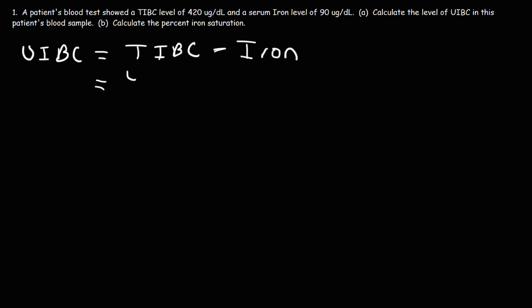So the TIBC value is 420 micrograms per deciliter minus 90 micrograms per deciliter. And so that is going to be 330 micrograms per deciliter. So that's how we can calculate the UIBC level.